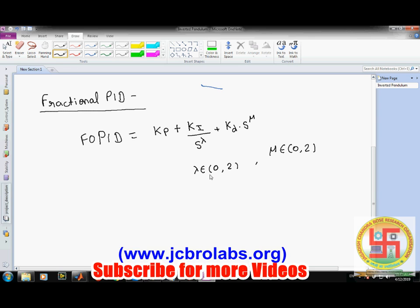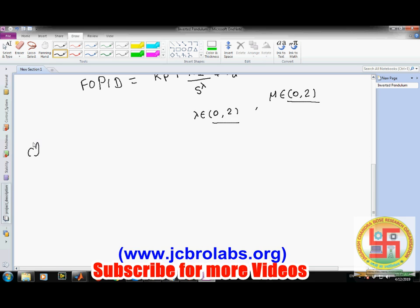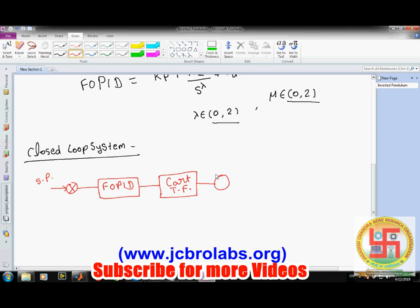Now, if we talk about our closed loop system architecture for this complete system, it goes like this. You have a certain set point here, and then you have a controller - that is, in our case, FOPID. Then you have a cart transfer function, and then you could have some disturbances available here which can be added to the cart.